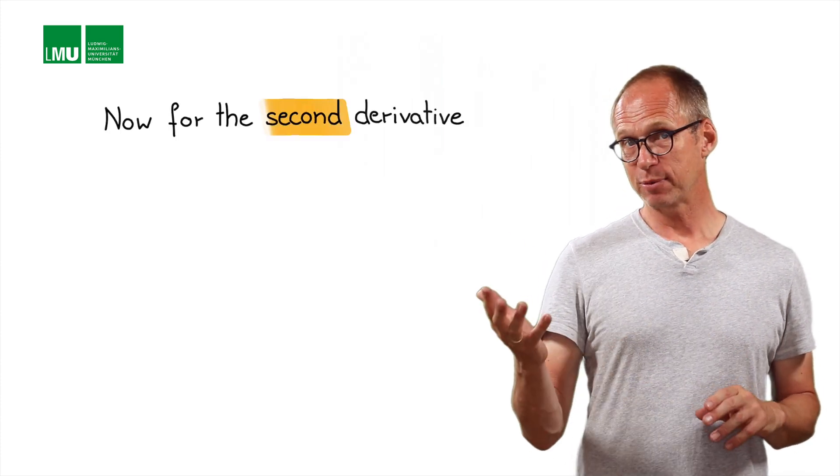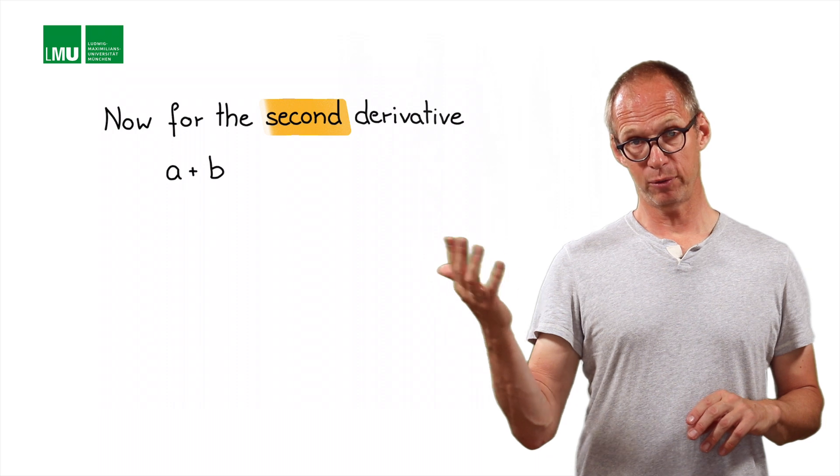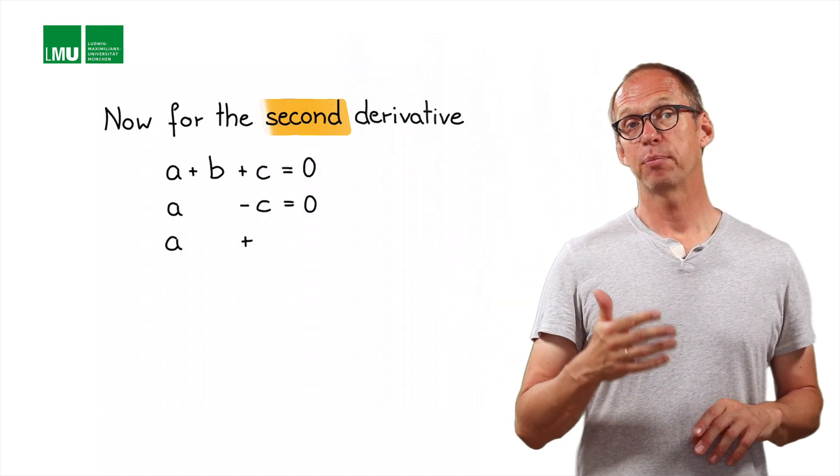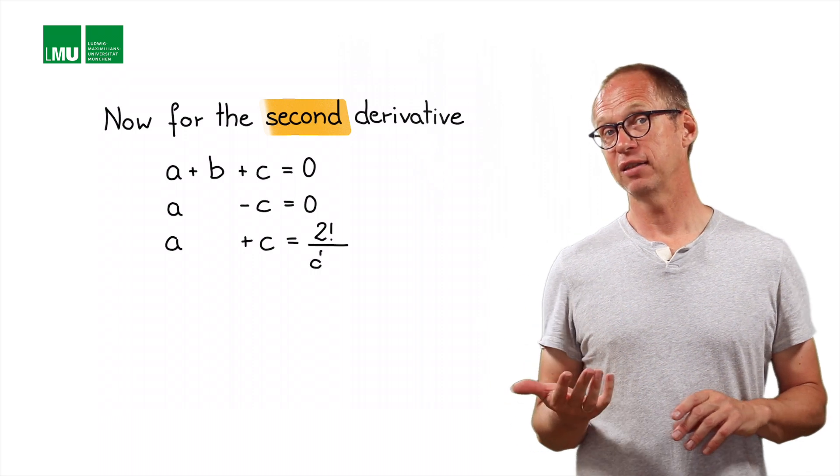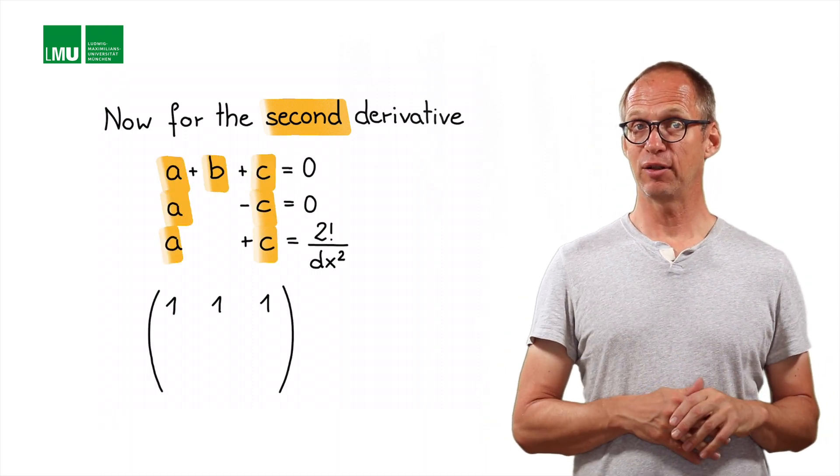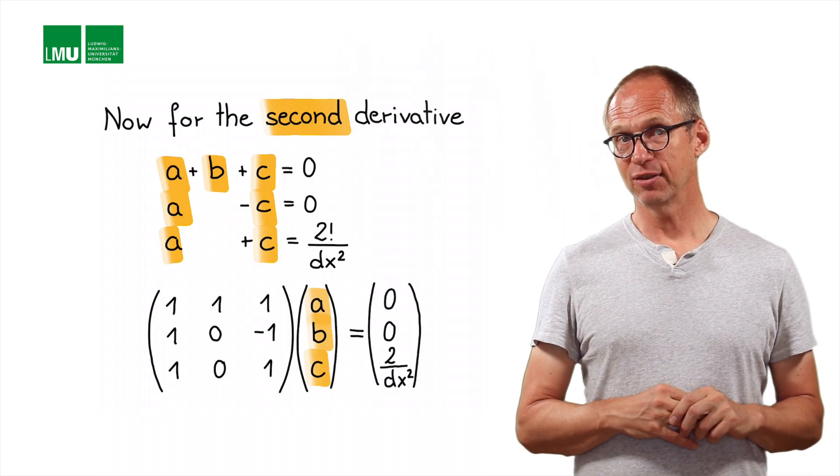So let's see if we can use the same approach to calculate the weights the coefficients for the second derivative. a plus b plus c has to be 0, a minus c has to be 0, and a plus c has to be 2 divided by dx square. Now we can develop the system matrix for this and solve the matrix inverse problem and here we go.